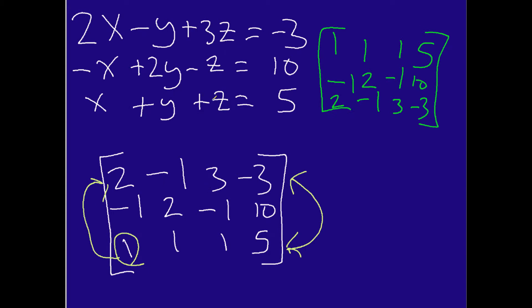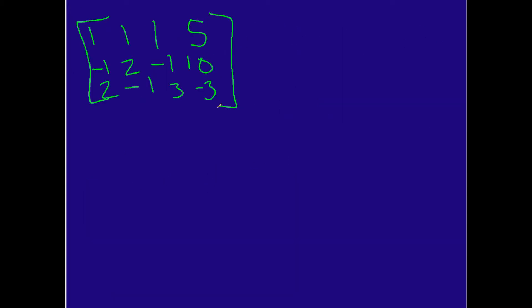So let me rewrite that for you. So at the top right here I have 1, 1, 1, 5. And then I have negative 1, 2, negative 1, 10. And then I have 2, negative 1, 3, negative 3, like so. Let me just go back and check, make sure that's how it is. Yes, 2, negative 1, 3, 3. All right, so this is what we have.